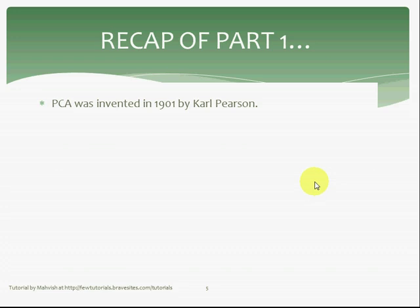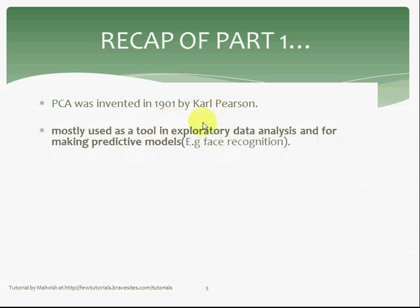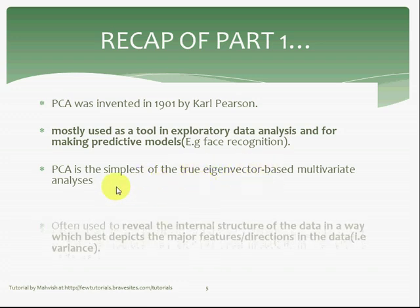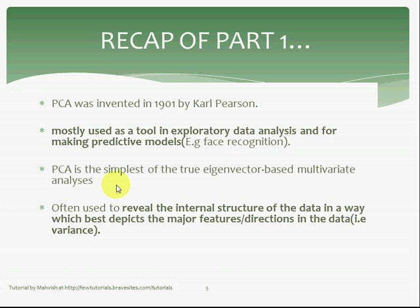PCA, as we read earlier, was invented in 1901 by Carl Pearson, and nowadays is mostly used as a tool in exploratory data analysis for making predictive models — for example, face recognition. PCA is the simplest of true eigenvector-based multivariate analyses, and this is one of the reasons why we selected PCA in the first place. It is often used to reveal the internal structure of the data in a way which best depicts the major features or directions in the data — that is, it depicts the variance in the data.